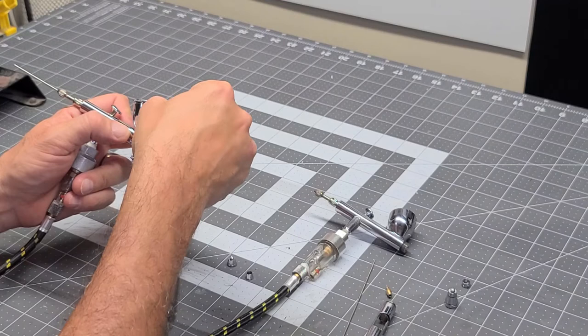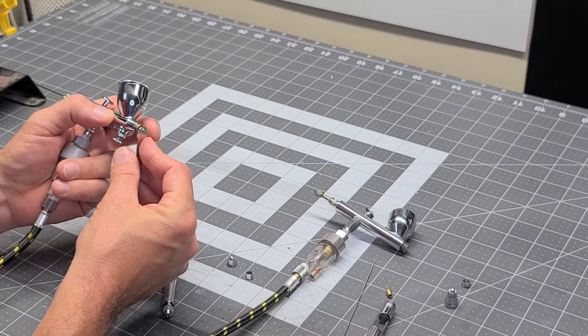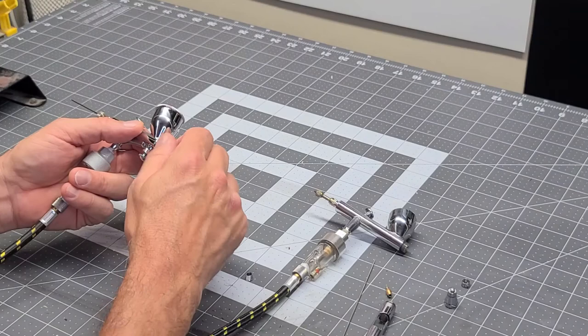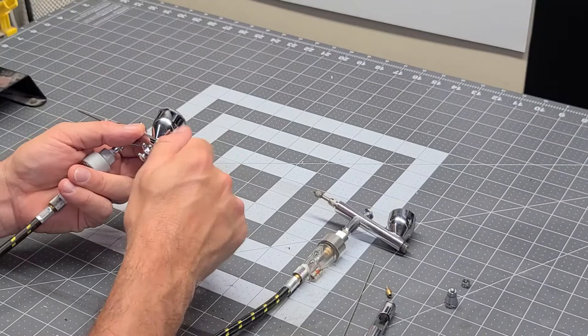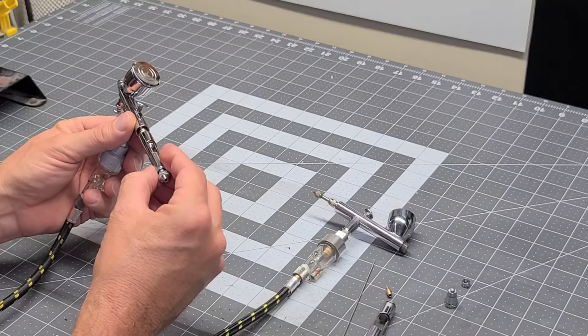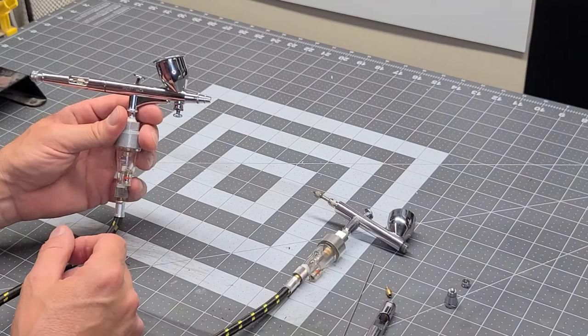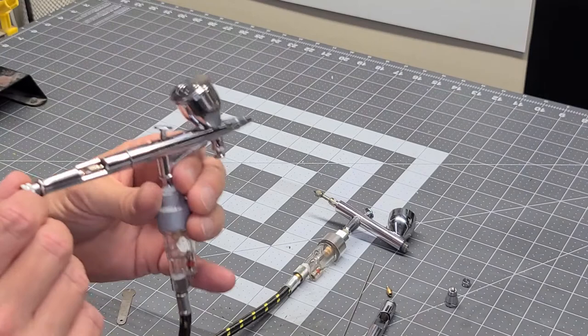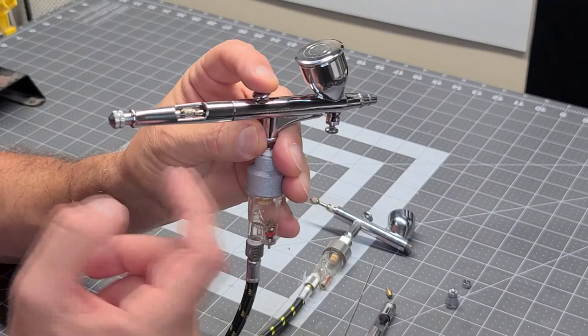So once you get the front of that gun protected up, now you can push your needle through. Put your back on. So in addition to having the MAC valve on this particular gun, this also has a needle stop. It's not as nice in my opinion as the Harder and Steinbeck, but it does work. What it is - it doesn't give you any numbers or dial, but basically if you push down on the trigger and you pull all the way back, you'll watch the stop push it forward.